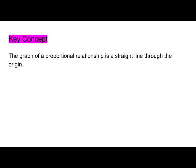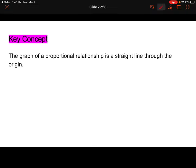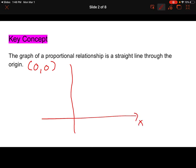So let's start off with our key concept for today. The graph of a proportional relationship will always be a straight line through the origin. So what is the origin? The origin is the point (0, 0) on a coordinate plane. If you have a plane with your x-axis and your y-axis, that point right at the middle is the origin, right where the x-axis meets the y-axis. It's the point where x is equal to 0 and y is equal to 0.